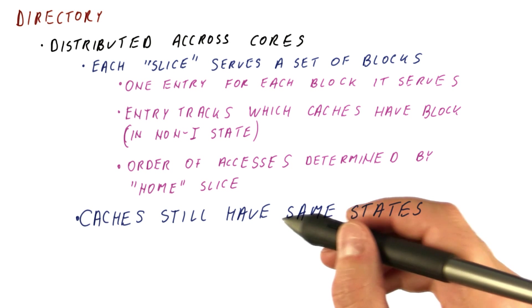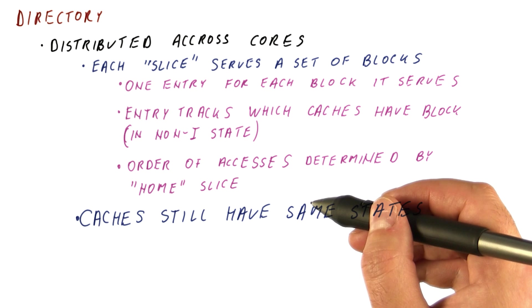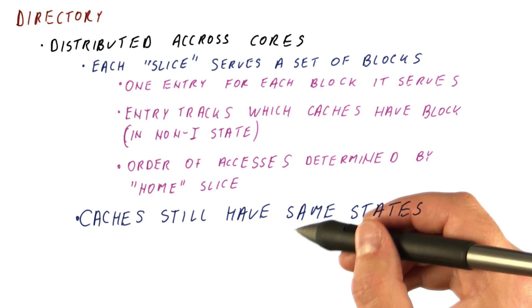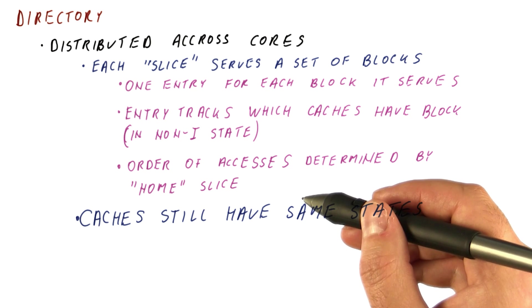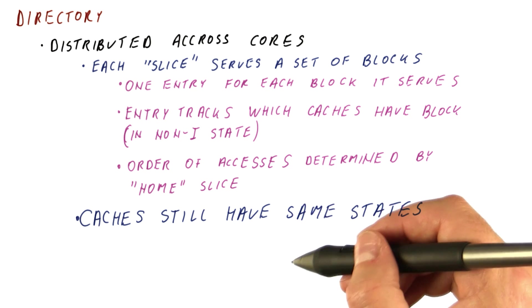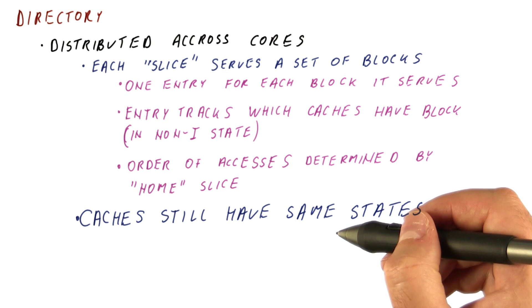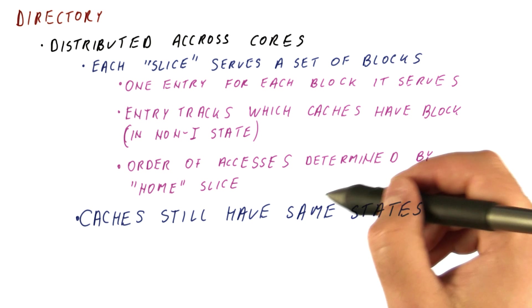It's just now, when we send a request to read or write, that request no longer goes on a bus. It gets sent via our network to the directory. So we can have many requests traveling to their individual slices. And then the directory figures out what to do.